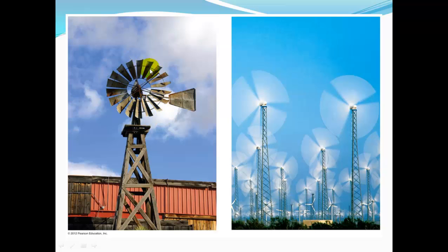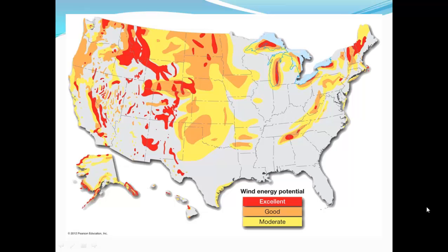Changes in wind direction associated with cyclones and anticyclones often bring changes in temperature and moisture conditions. Here's a cup anemometer — it spins faster the faster the wind is — and a wind vane that rotates to show which direction the wind is coming from. To generate energy from wind, certain areas in the United States have more potential: red zones have the highest potential, dark orange is good, and yellow is moderate potential for developing wind farms.